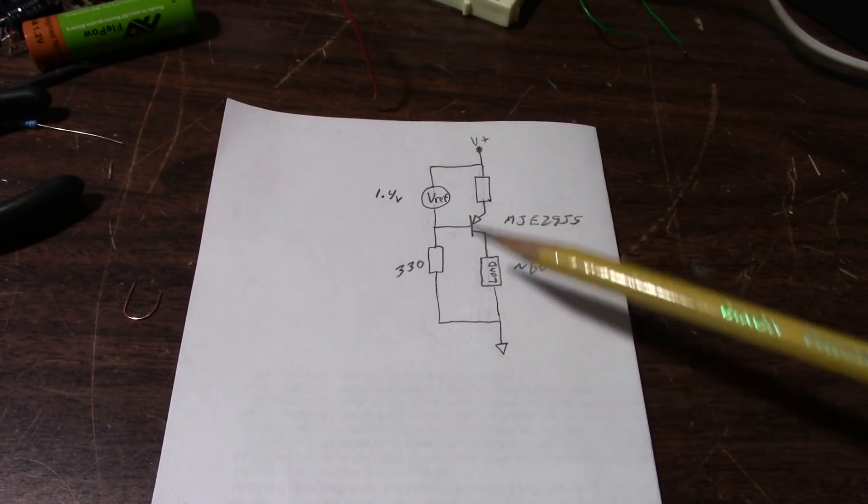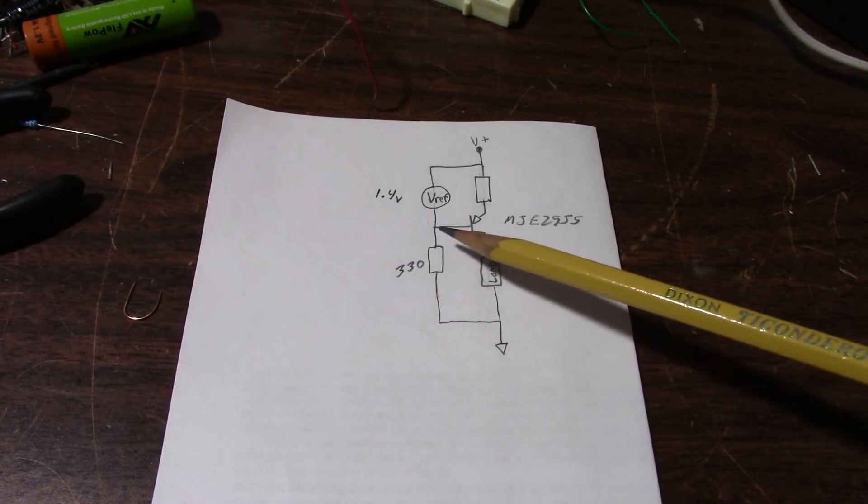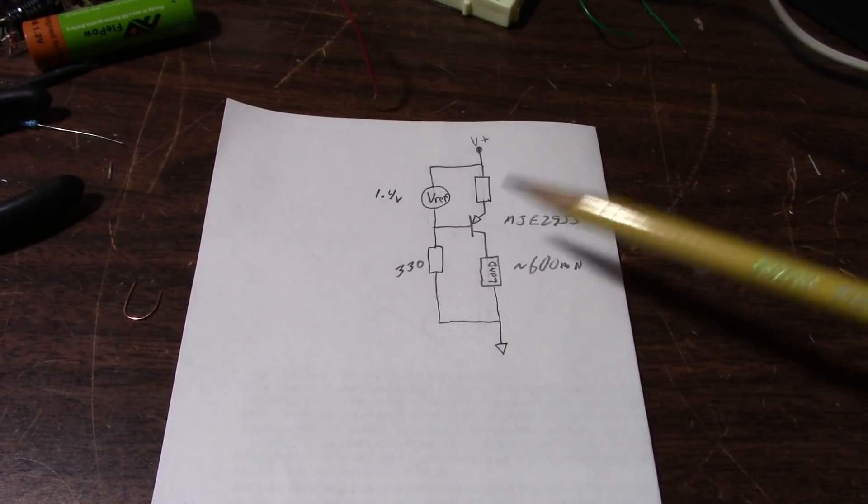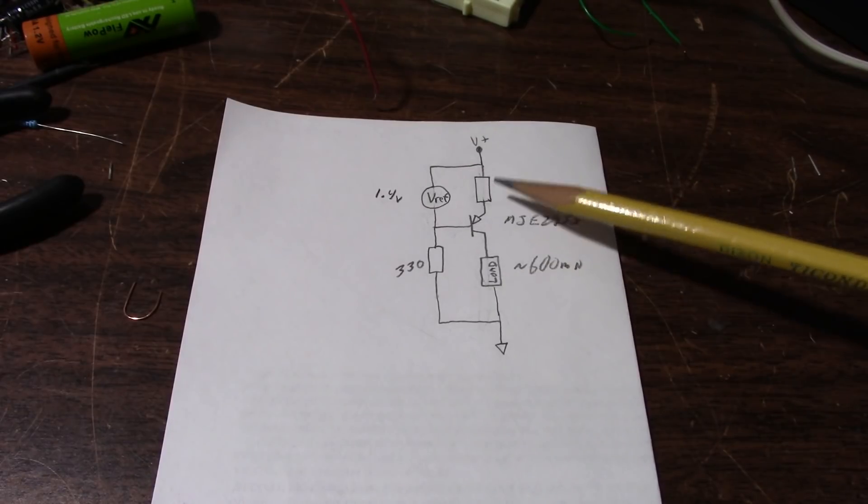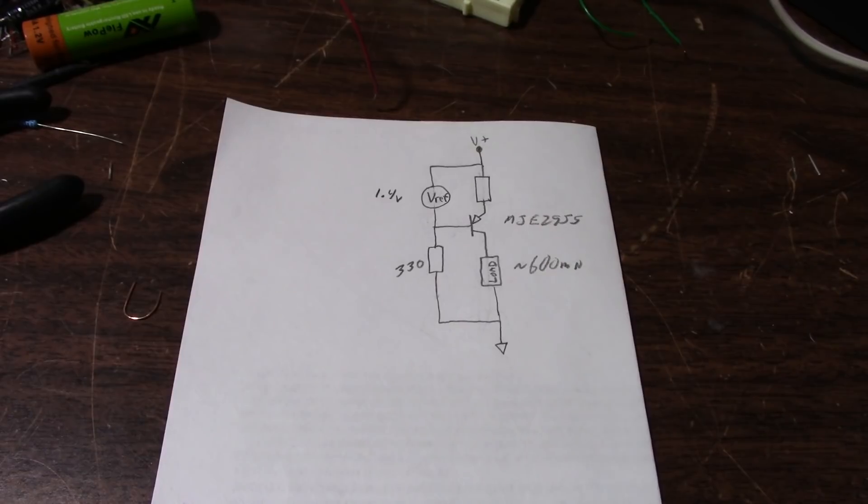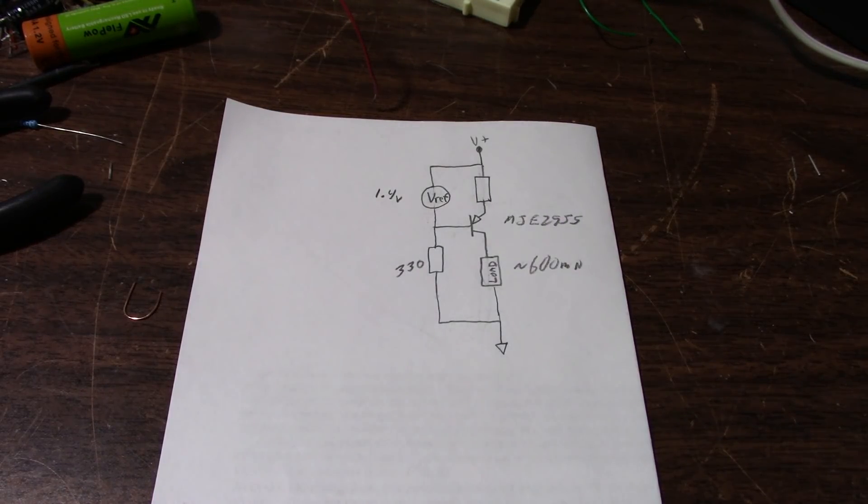So our collector current is going to be the current through our load here minus current going through the base. And because the base current is so small, we can just ignore that for designing this current source. It's not a critical thing. So you can use 600 milliamps to calculate the current through this resistor. So there you go. You have the two values you need. 0.7 volts divided by 600 milliamps. So the calculometer here is saying about 1.2 ohms.